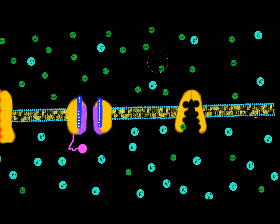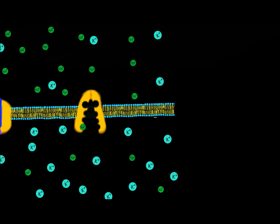For example, the sodium concentration on the outside of the cell is around 300 millimoles per liter, and the potassium concentration on the outside is around 20 millimoles per liter. These values vary from cell to cell.